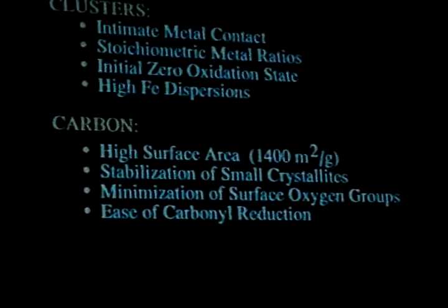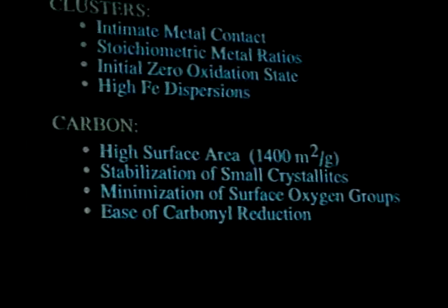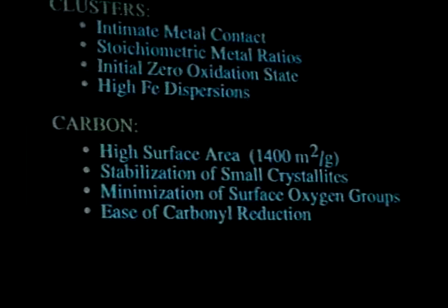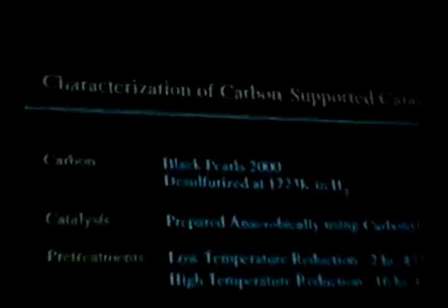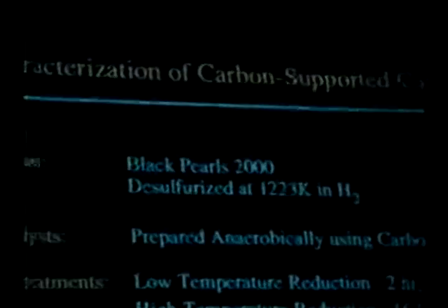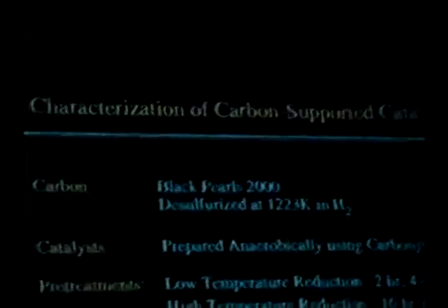We also get zero oxidation states initially for these metals when we impregnate the carbons, and we can get very high iron dispersions on these catalysts. The carbon we use to support is high surface area carbon, 1400 square meters per gram, which tends to stabilize small metal crystallites very well. We can also minimize the number of surface oxygen groups by high temperature treatments of the carbons so that we can get zero valent metals on the support.